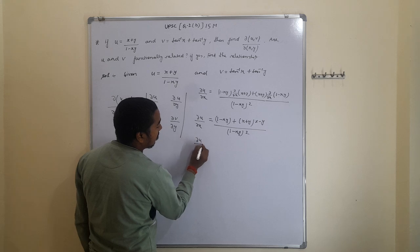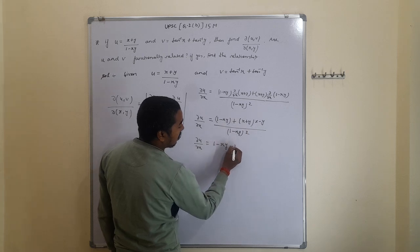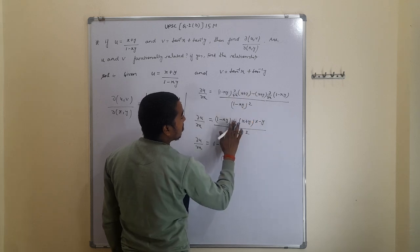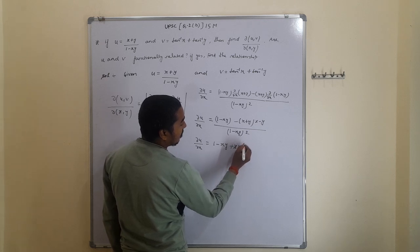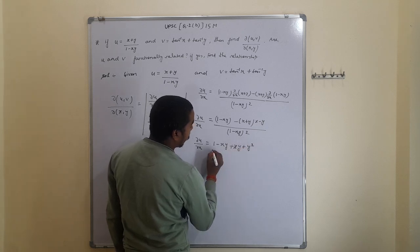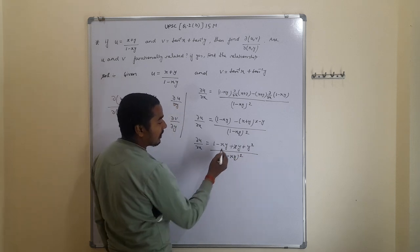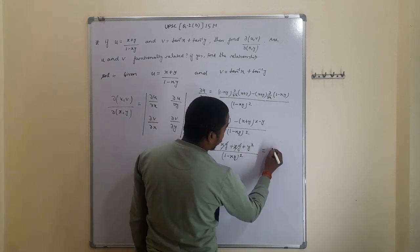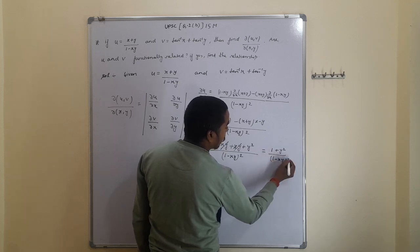Expanding the numerator: (1 - xy) + y(x + y) = 1 - xy + xy + y². The terms -xy and +xy cancel out, leaving 1 + y². Therefore, ∂u/∂x = (1 + y²) / (1 - xy)².